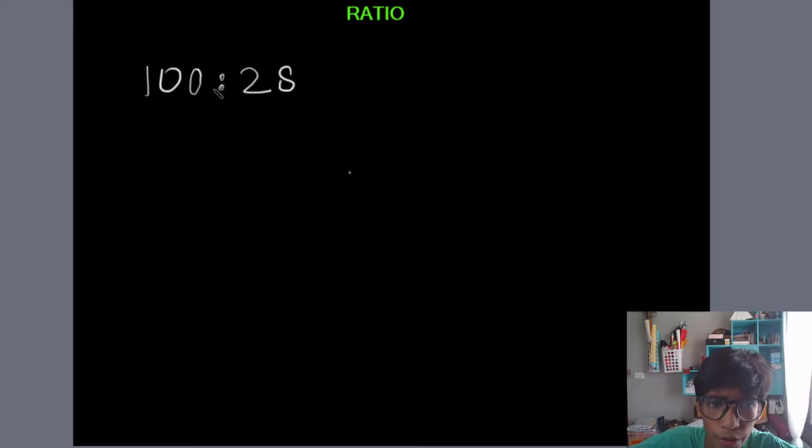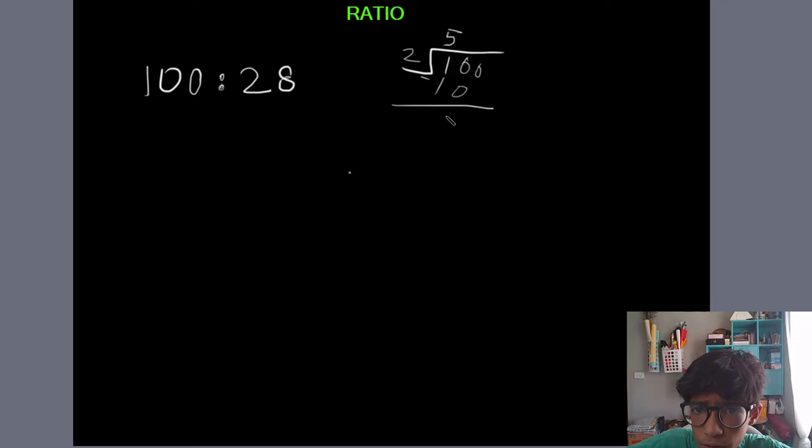So we're going to divide these two numbers with two. We'll write 100 here and then we'll write two here. Two fives are 10, minus zero, zero. This zero will go up, that will be 50.